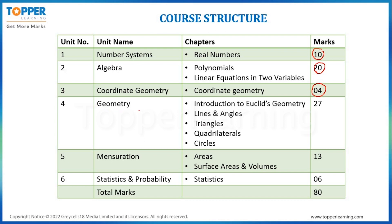The next unit is Geometry, and this will be having 5 chapters in it, totaling 27 marks. The chapters are: Introduction to Euclid's Geometry, Lines and Angles, Triangles, Quadrilaterals, and Circles.